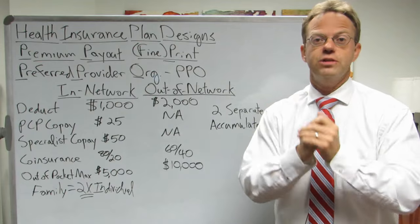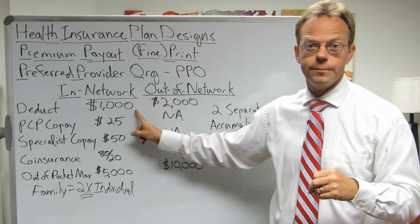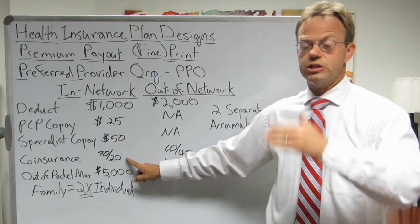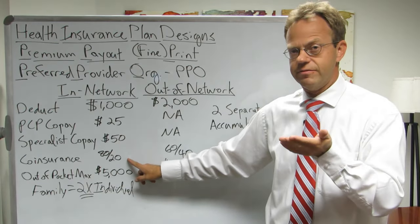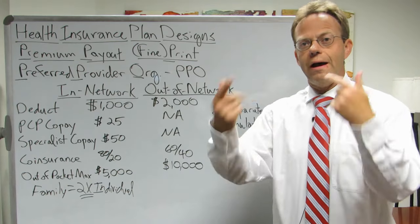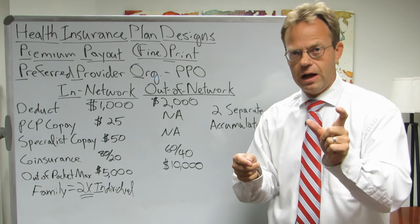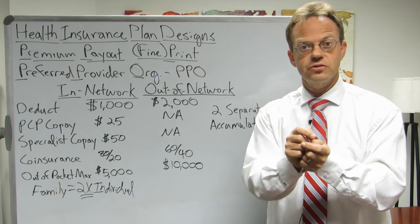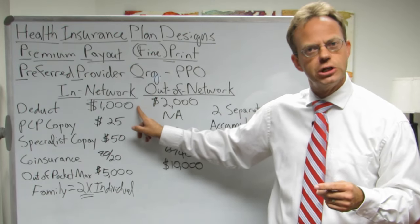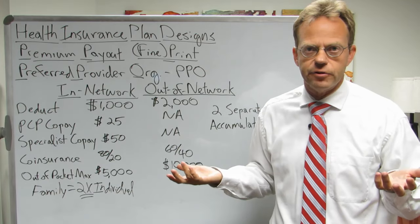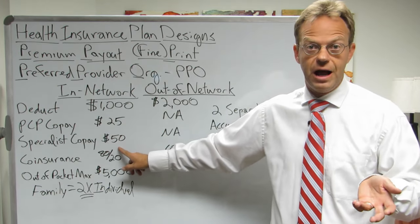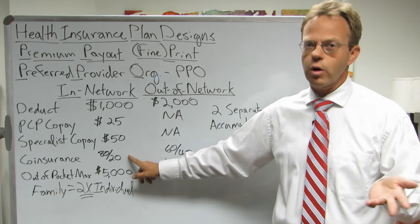For that $2,000 MRI, you're responsible for the first $1,000 as the deductible. The remaining $1,000 is then split by co-insurance: the insurance company pays 80% ($800) and you pay 20% ($200). So your total out-of-pocket for that MRI is $1,000 plus $200, equaling $1,200. For a second MRI the same year, you've already met the deductible, so the insurance pays 80% ($1,600) and you only owe 20% ($400).